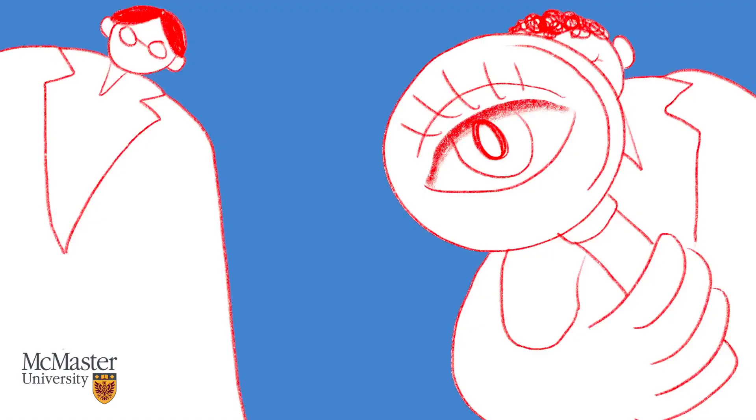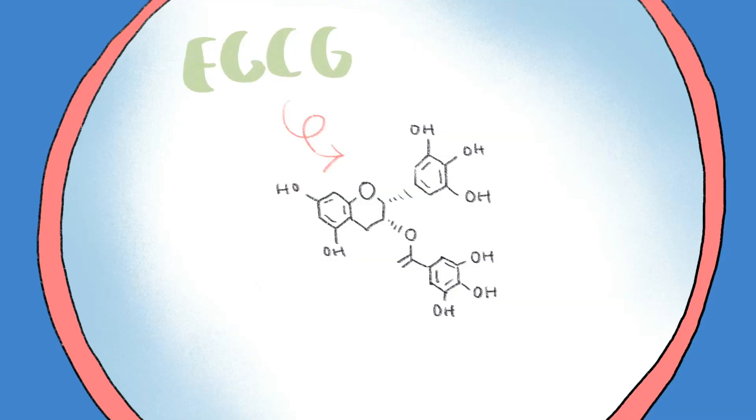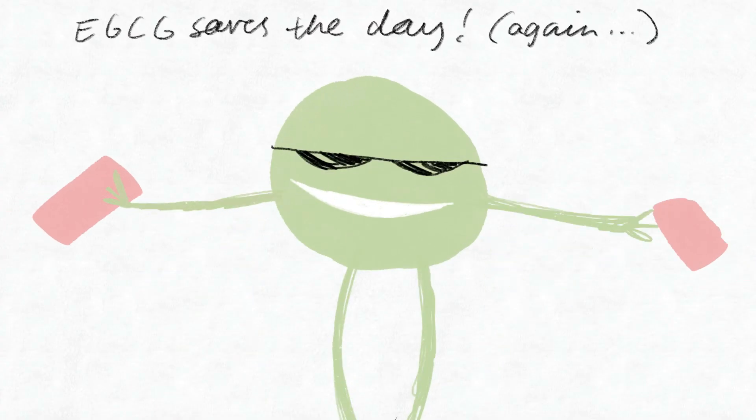Another study by McMaster University in Canada has shown that EGCG also inhibits the binding of beta amyloid proteins to prevent the formation of plaques.